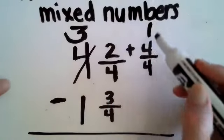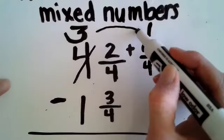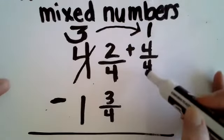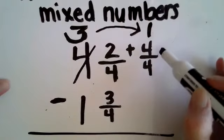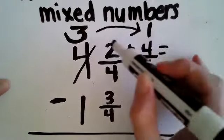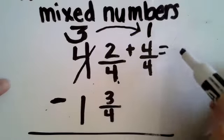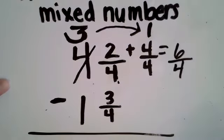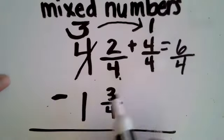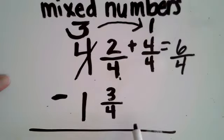I brought over the one whole. It went like this. It's fraction land though so I have to write it as a fraction. Now I need to see what am I left with here. Two fourths plus four fourths is six fourths. Six fourths take away three fourths. Denominator stays the same. Six subtract three is three.